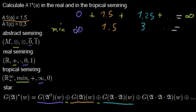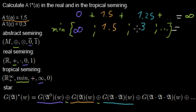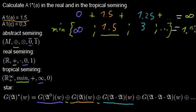For the tropical semi-ring, our addition is the minimum, so I'm taking the minimum of all these weights. As stated before, the weights increase because I always have to add them to each other. So the first weight is the lowest, and therefore the weight of A-star in the tropical semi-ring is 1.5. And that's how you do the calculation for A-star in both semi-rings.